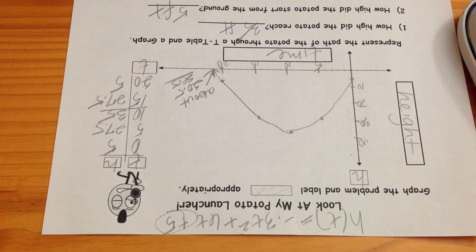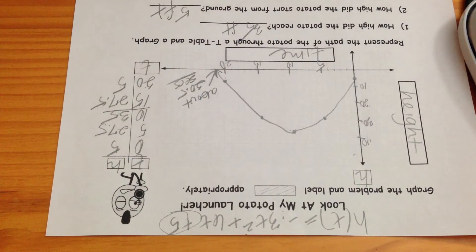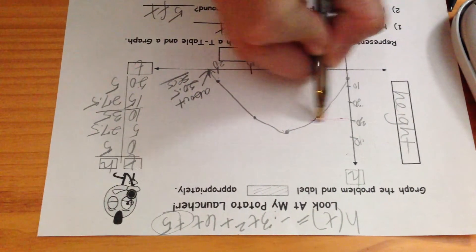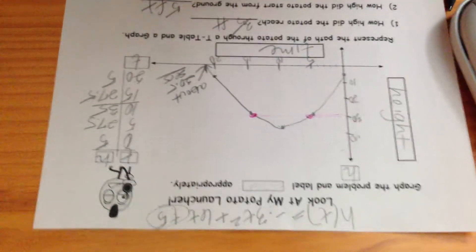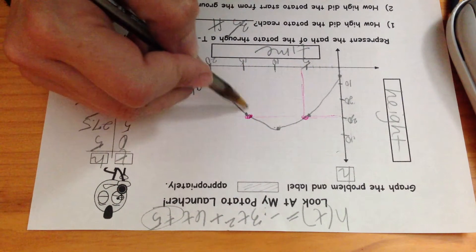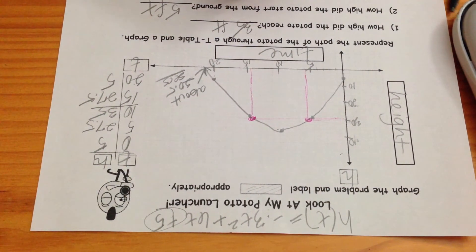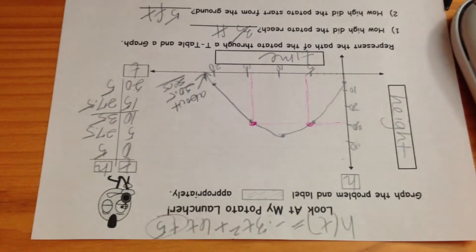At approximately what time did the potato reach a height of 30 feet? You know what, when we did this in class, a lot of people missed the fact that it reached 30 feet high, not once, but twice, about 6 and 14 seconds.